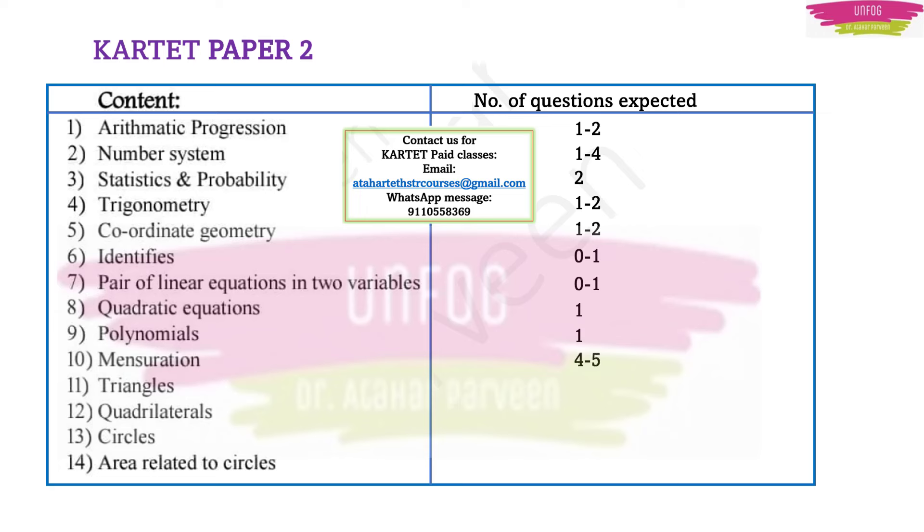Mensuration we can expect 4 to 5 questions, from triangles 1 question, quadrilaterals 1 to 2 questions, circles 1 question, and 1 to 2 questions from area related to circles. From this blueprint it is clear that number system and mensuration are the most important chapters. Now keeping this aside, I have done research by analyzing the previous year question papers. Based on that I have come up with the most expected 7 questions - compulsory type questions which will be asked in 2024.